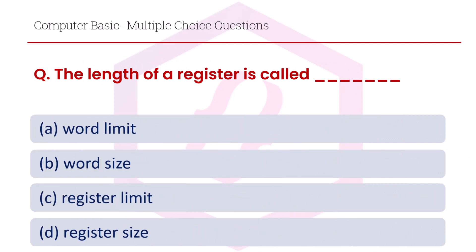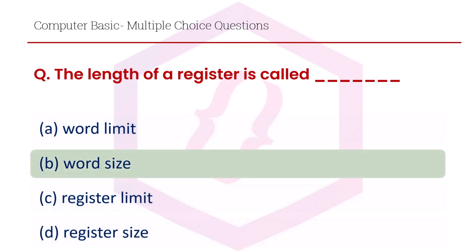The length of a register is called: option A word limit, option B word size, option C register limit, option D register size. The right answer is option B, word size.